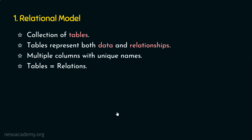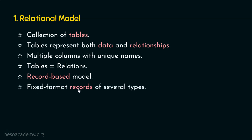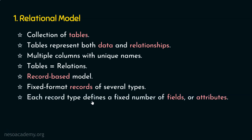In the relational model, everything is of relations. The data are stored in a relation or table, and the relationship among the data or tables is also stored in a relation. This relational model is also referred to as a record-based model. A record is actually a fixed-format record of several types or data types. Each record defines a fixed number of fields or attributes.